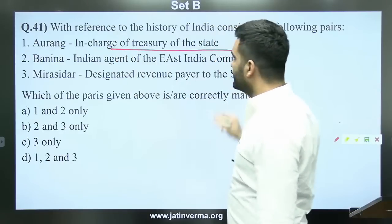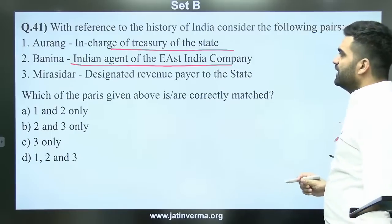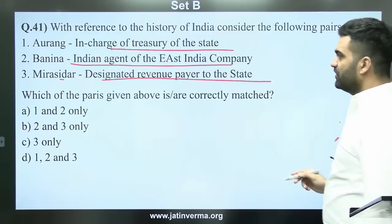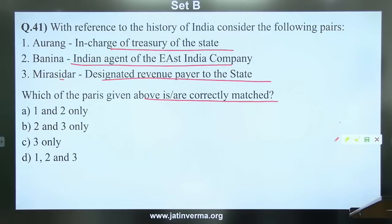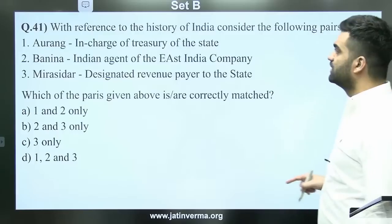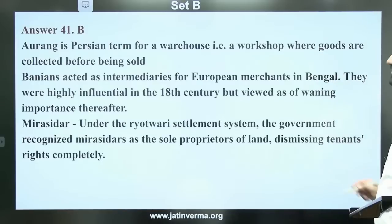Question 41: With reference to the history of India — match the pairs: Aurangi — in charge of treasury of the state; Banina — Indian agent of the East India Company; Mirasidar — designated revenue payer to the state. The answer to question 41 is B — pairs 2 and 3 are correctly matched.